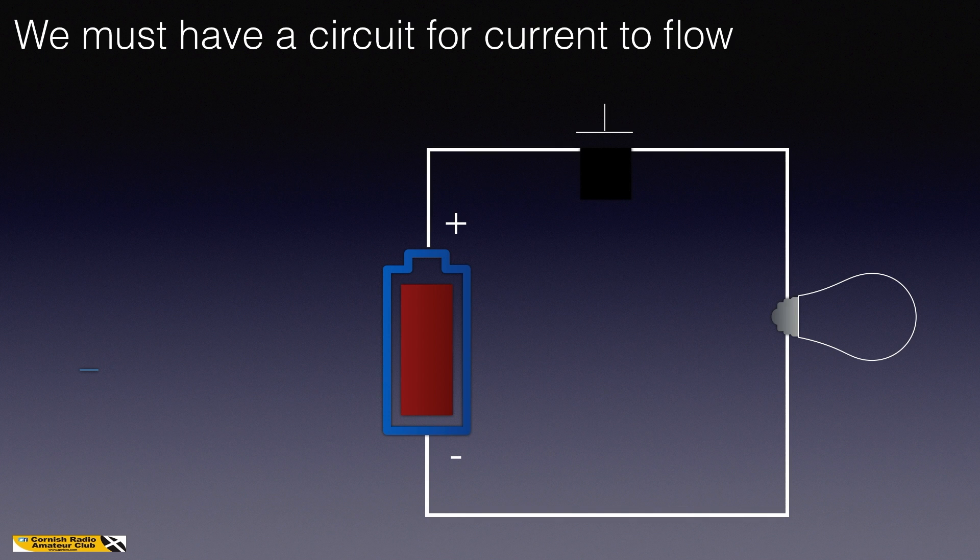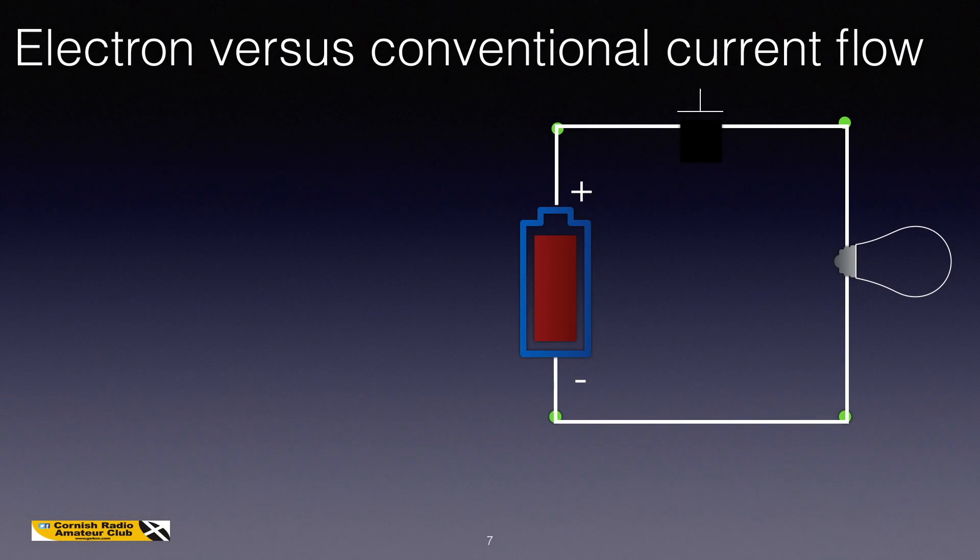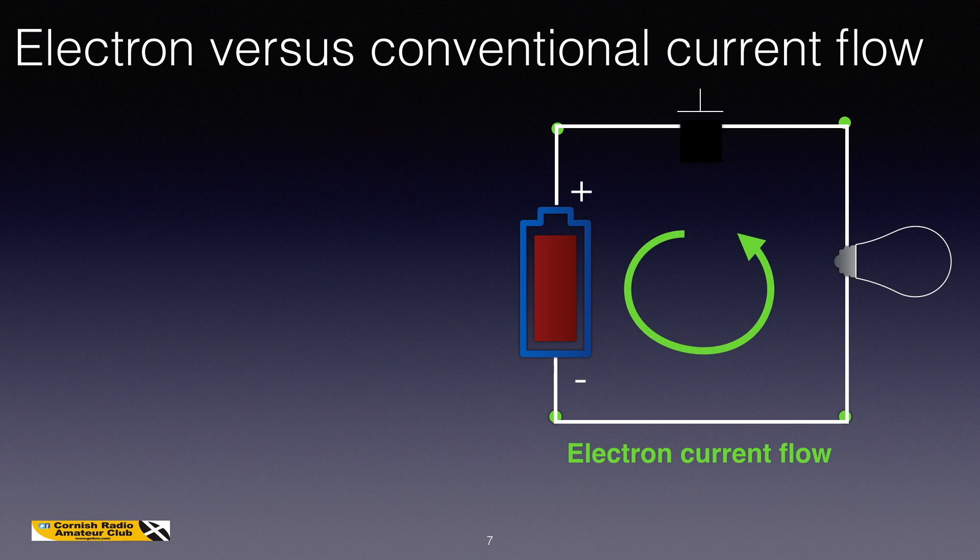Let's have a look at electron versus conventional current flow. In our pictorial animation, we showed electron current flow going anti-clockwise, electrons flowing from the negative to the positive. But conventional current flow, how we conventionally think of the current flowing, is from positive to negative, clockwise.